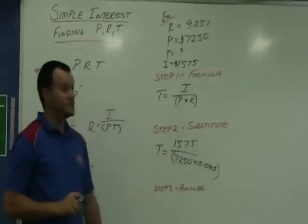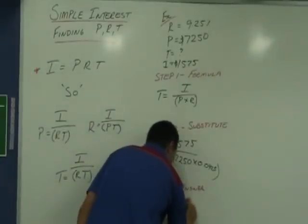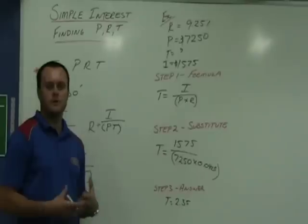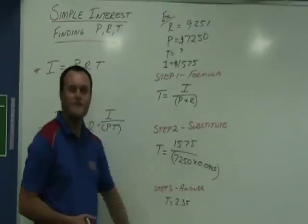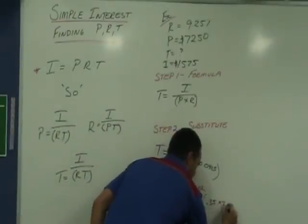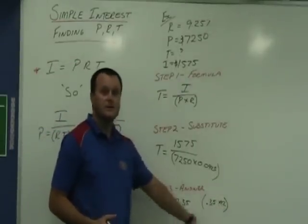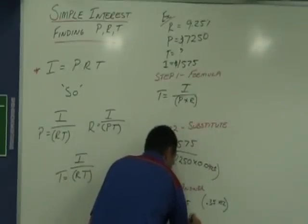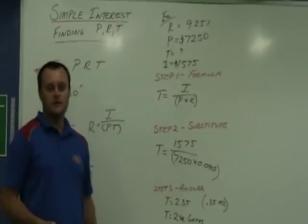Typing that into our calculator, we get 2.35. Now, you can go and write 2.35, but we're trying to be mathematical here. We want to be a little bit more correct. So, we need to find out what 0.35 of a year is. We do that as a fraction - 0.35 of 12, of meaning multiply, 12 months in the year. And what we end up with is 2 years and 4 months approximately. Nice and simple.